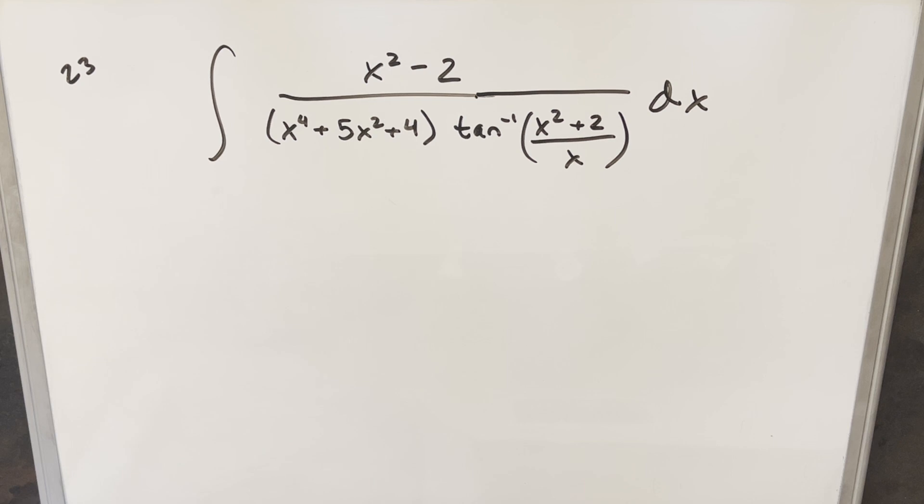This is one of those cases where it looks so complicated there must be an easy way to simplify this. The first thing I thought about is having arctan here. Now when we have arctan, usually there's two ways we want to go about it. We can do a u substitution or we can do integration by parts where we differentiate it.